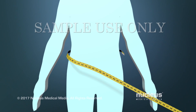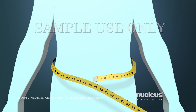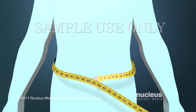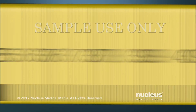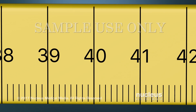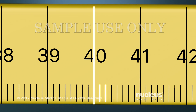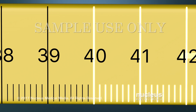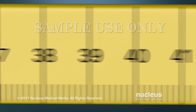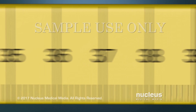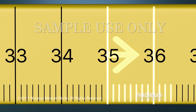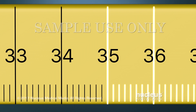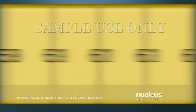Adults can evaluate belly fat by measuring their waist size with a tape measure. Men with a waist size above 40 inches, and non-pregnant women with a waist size above 35 inches, may have a higher risk of health problems from obesity.